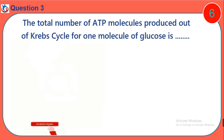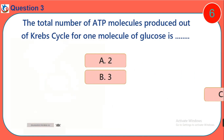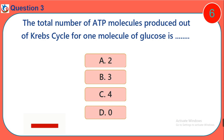Question 3. The total number of ATP molecules produced out of the Krebs cycle per one molecule of glucose is: A. 2. B. 3. C. 4. D. 0.